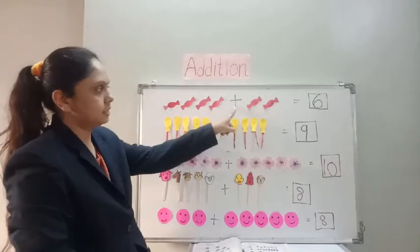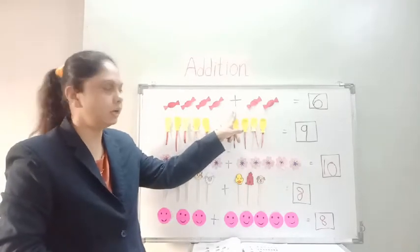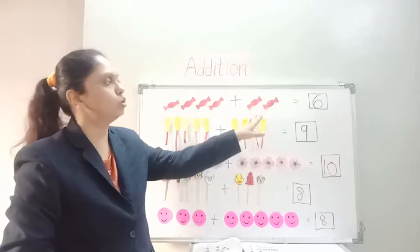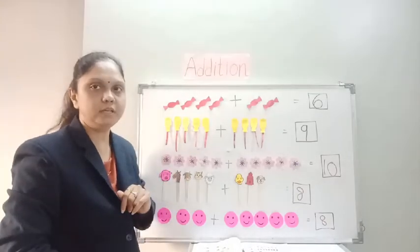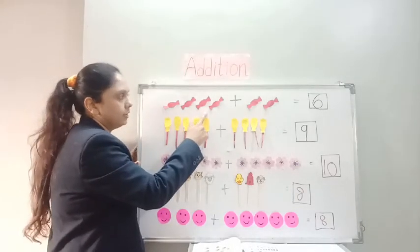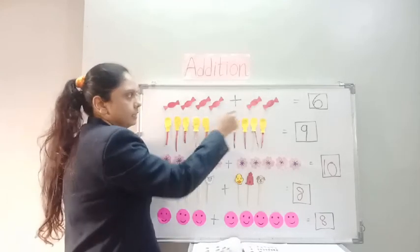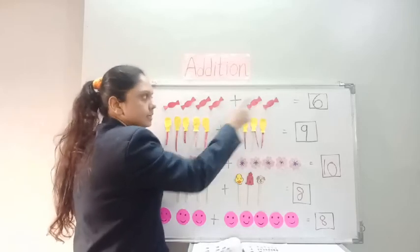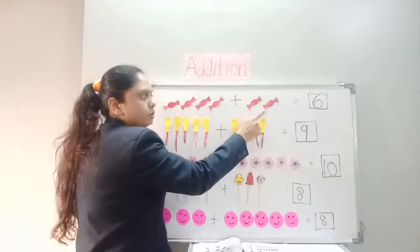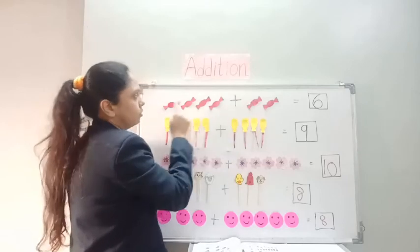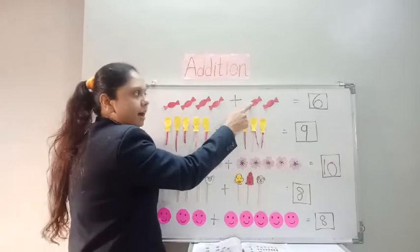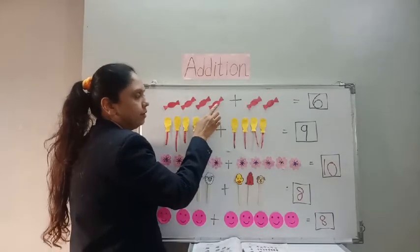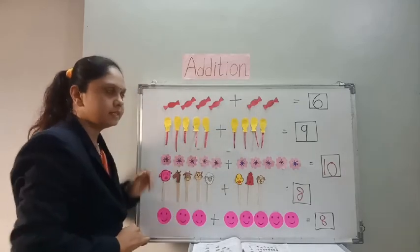Let me explain again. This is the symbol of addition. Addition means — suppose you have 4 chocolates and papa brings 2 more chocolates. Already 4 chocolates, and papa brings 2 chocolates. So count total: 1, 2, 3, 4, 5, 6. Total is six. Remember — you don't start new counting. After 4, continue: 5 and 6. So total chocolates are 6. You have to continue counting, not restart from 1.